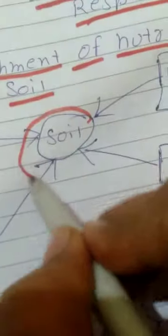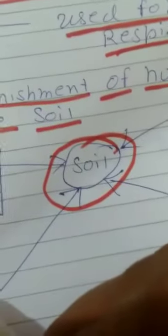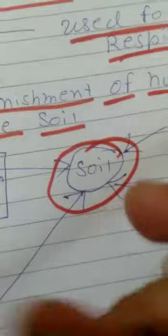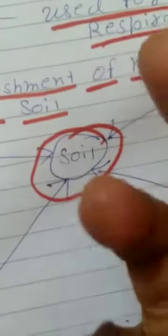Now we are knowing that soil directly cannot take the nitrogen from the atmosphere. It has to be trapped. But how it happens?